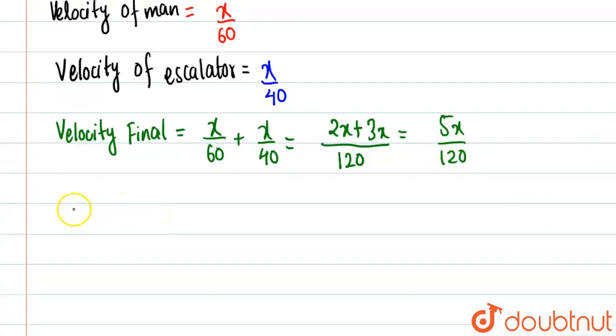So we have the final velocity. Now time taken when escalator and man both move, this will be equal to displacement, basically distance by velocity.